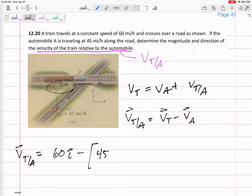Minus VA. So what is VA? What's the velocity of the automobile? It's 45, but it is at a 45 degree angle. So let's see, cosine 45 in the I, 45 sine 45 in the J. And be real careful to subtract that whole VA term. So put those brackets up.